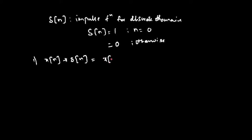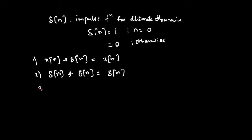If you take the convolution of x of n with delta of n, this will result in x of n again. Number two: if you take the convolution of the impulse functions itself, delta of n convolved with delta of n, this will result in delta of n again. Number three: x of n convolved with the delayed impulse function delta of n minus k will result in the delayed input signal x of n minus k.